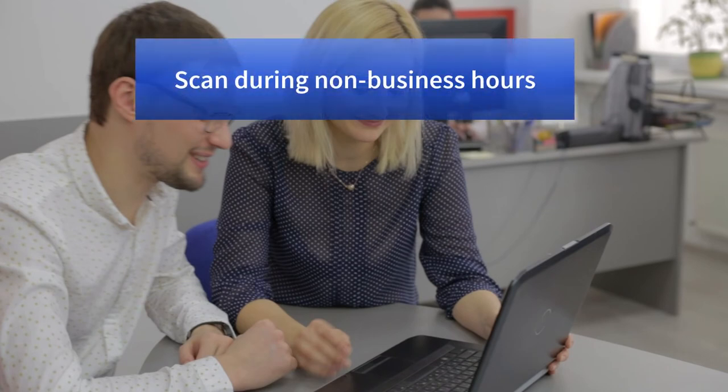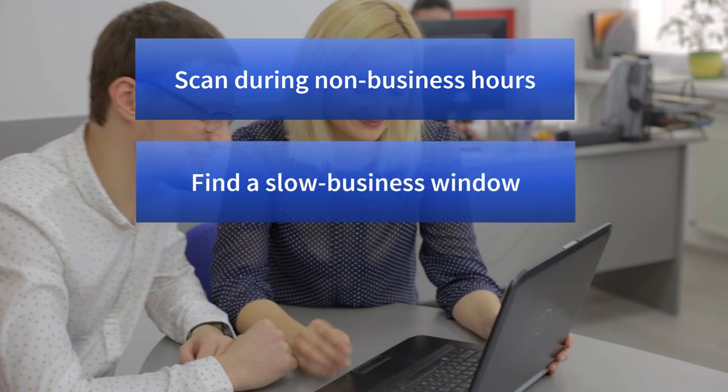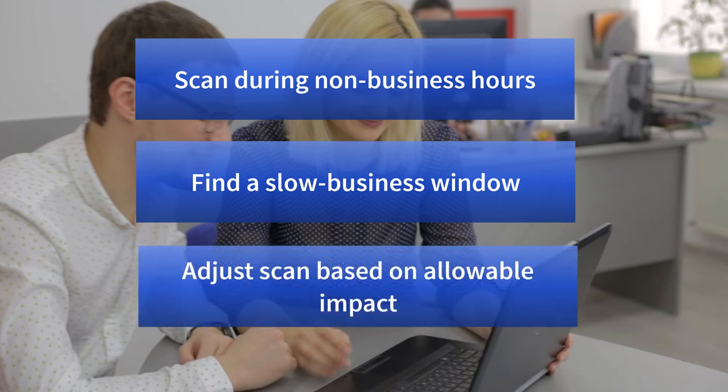When scheduling scans on production systems and network devices, security must consider possible impacts on network and system performance. For example, scanning the payroll server during payroll processing will likely have someone in security removed from the payroll. It's best to scan during non-business hours, but this is not always possible. When necessary, work with the system process owner to determine a window with the least impact on business operations. Most solutions allow adjusting how much load is placed on a scanned device, and by slowing down the scan process and ensuring low-use time scans, vulnerability scanning should be relatively painless.